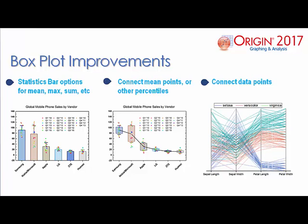Some significant improvements have been made to box plots in Origin 2017, such as showing box plots as statistical burrs with errors, means with standard deviation, median, and other percentile points of boxes. There is also the ability to plot parallel coordinate graphs, a box plot variant that only shows data points in a vertical line, connecting each data point to another variable of that data.